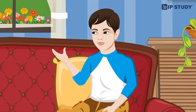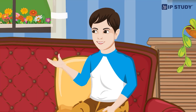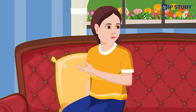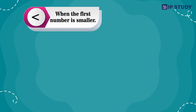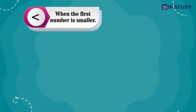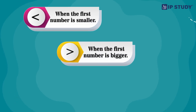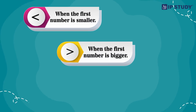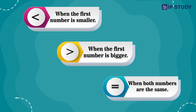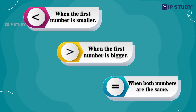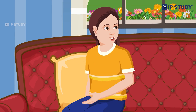What kind of special signs? We use less than when the first number is smaller, greater than when the first number is bigger, and is equal to when both numbers are the same.